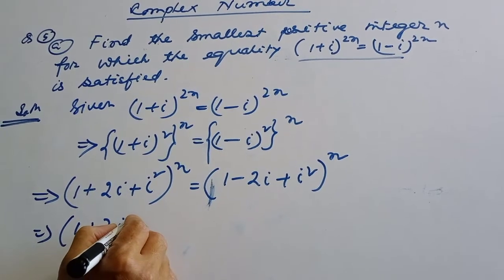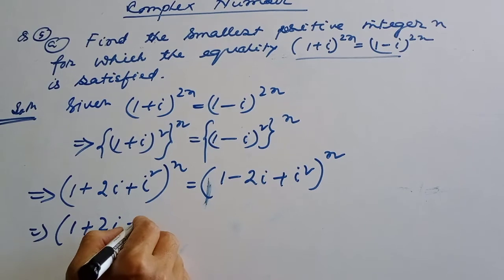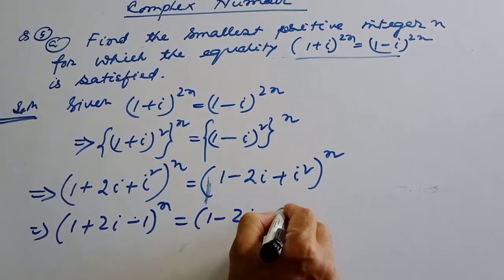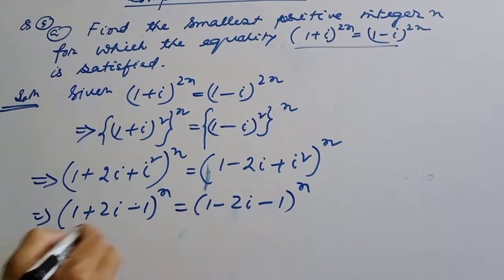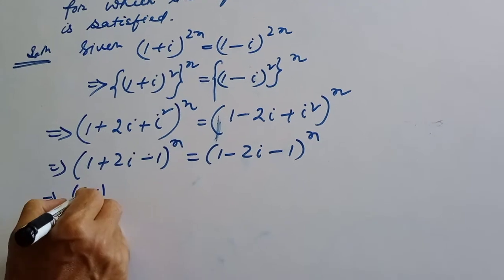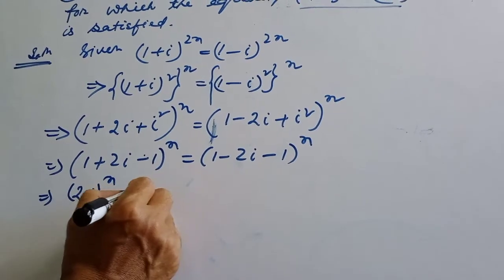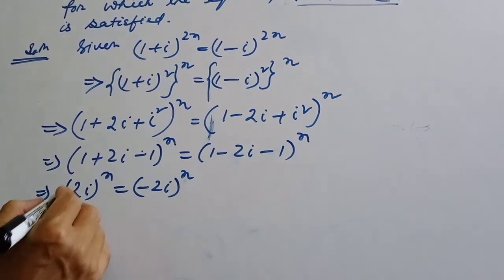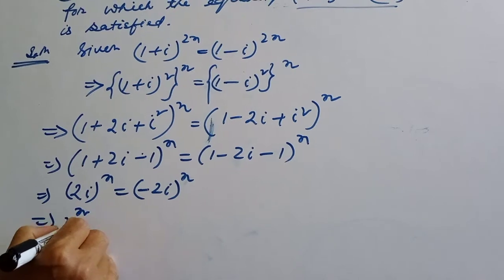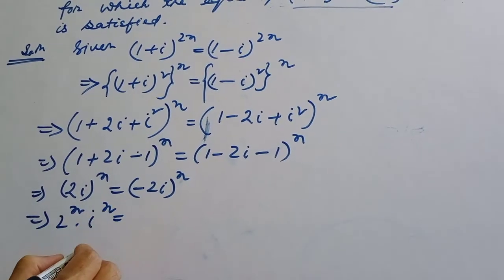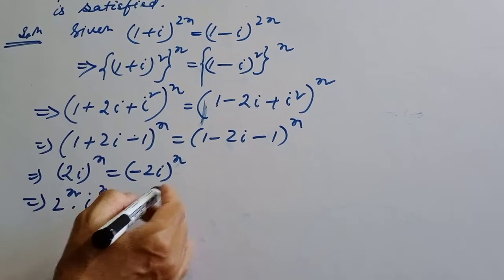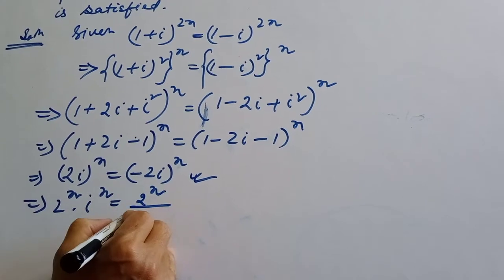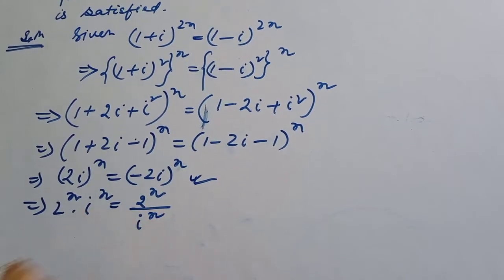Since i² = -1: (1 + 2i - (-1)) = (1 + 1 + 2i) = (2i) to the power n on the left. On the right, (1 - 2i + (-1)) = (-2i) to the power n. So we have (2i)^n = (-2i)^n, which gives 2^n · i^n = (-2)^n · i^n.